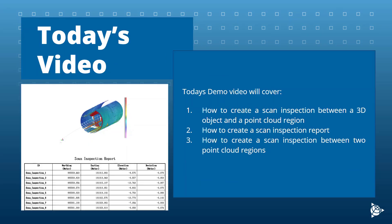This tutorial will first cover how to create a scan inspection between a 3D object and a point cloud region, then how to create a scan inspection report from that newly created scan inspection, and lastly how to create an inspection between two point cloud regions. Now that I've gone over what we will cover, we can move on into TBC.